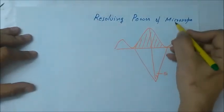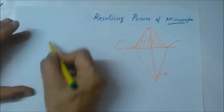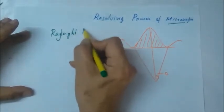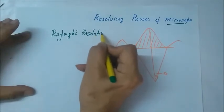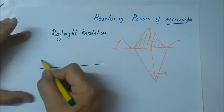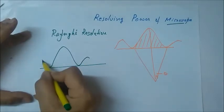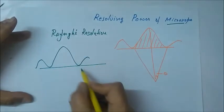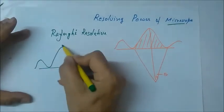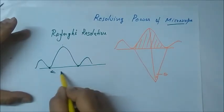We will derive the resolving power of microscope, but before we do that, we should know the Rayleigh's resolution criteria. When an image is formed by an optical instrument and diffraction takes place because of the wave nature of light, you have a central maxima which is the image which we actually see in optical instruments.